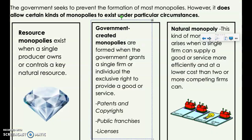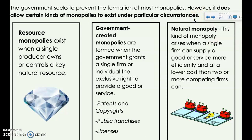The government seeks to prevent the formation of monopolies; however, it allows certain kinds of monopolies to exist because of very particular circumstances. There are actually three broad categories of legal monopolies: resource monopolies, government-created monopolies, and natural monopolies. I'm going to talk about each one and give you an example, because this could come up on assessments going forward as well.